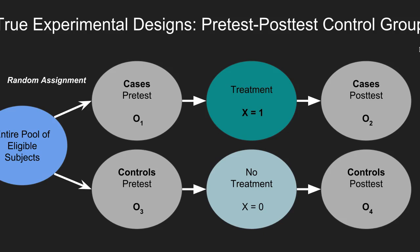The highest level of evidence is the true experimental design, best exemplified by the pre-test post-test control group design. What distinguishes it from the quasi-experimental design is that an entire pool of eligible subjects is randomly assigned into either a treatment group or a control group. Any difference in measurement scores between the study groups can be presumed due to the experimental effect, and researchers can have the highest level of confidence that results reflect social reality, as both manipulation and random assignment are honored.